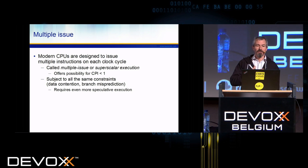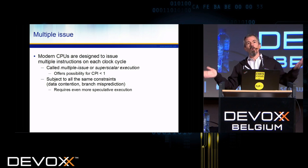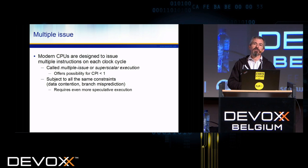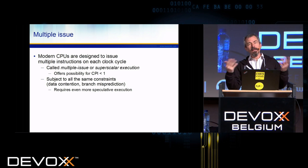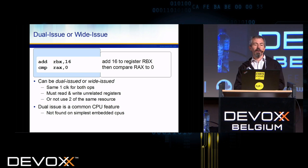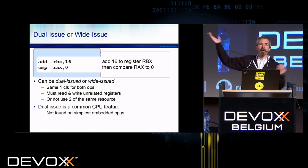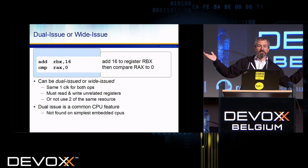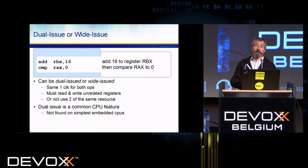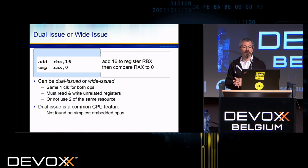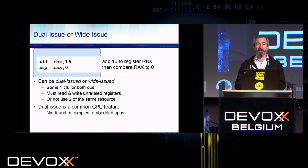Then we get into wide issue or multi-issue, where you might get multiple instructions done in one clock and your cycles per instruction keep dropping as you execute many things per clock cycle. You have all the same constraints of data contention or misprediction, and even more speculative execution is required. If I have a set of instructions that are unrelated, I can wide-issue them both in the same clock cycle. They read and write unrelated registers — I have to check that, which is a quadratic operation as I add more instructions. Dual issue is common on almost all CPUs except the simplest embedded ones.